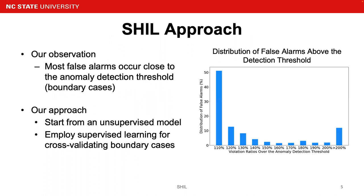In our past experiments, we observed that most false alarms occur close to the region slightly above the anomaly detection threshold. We defined those regions as boundary cases. As we can see from the graph on the right, even with 110% boundary cases it contains more than 50% of false alarms. And if we increase the boundary cases from 110% to 200%, we are able to capture more than 85% of false alarms.